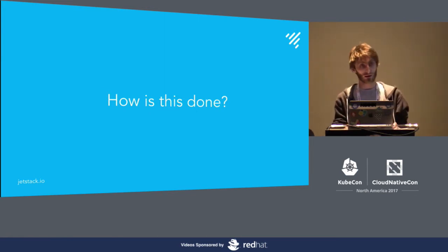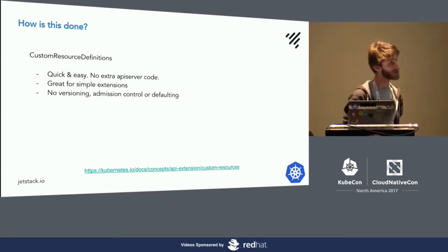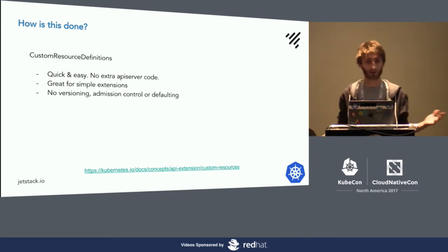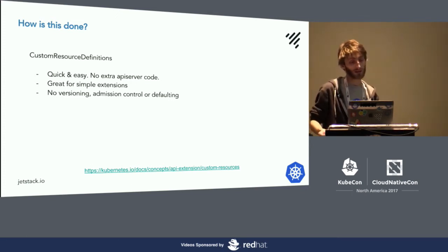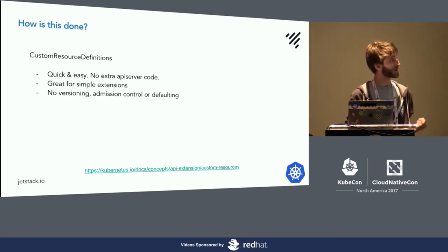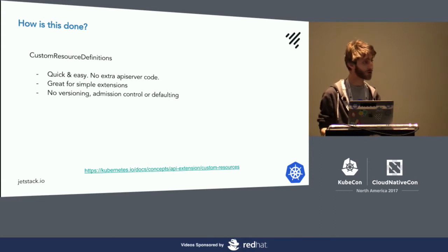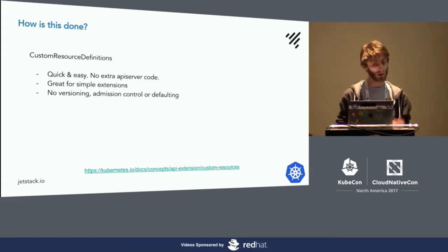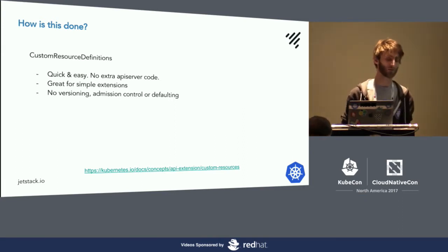How do we actually do this? We've got custom resource definitions — a nice, quick, easy way to add a new type. But there are a few things we don't have with that: we don't have the versioning we just spoke of just yet, admission control is kind of available now with webhooks, and we don't have defaulting on fields — if this isn't set, make it this. We don't get that with CRDs right now.